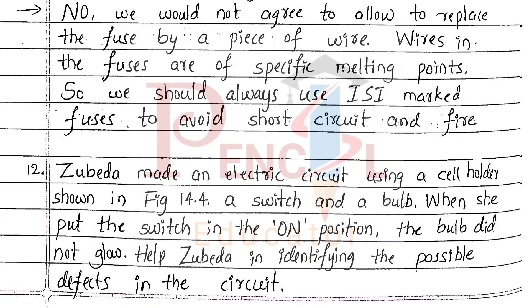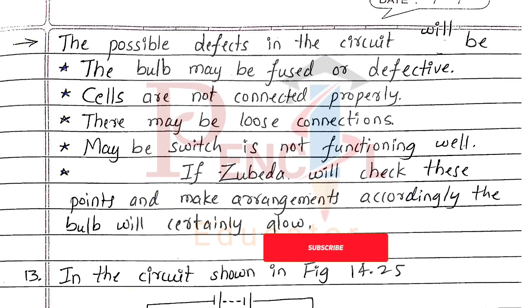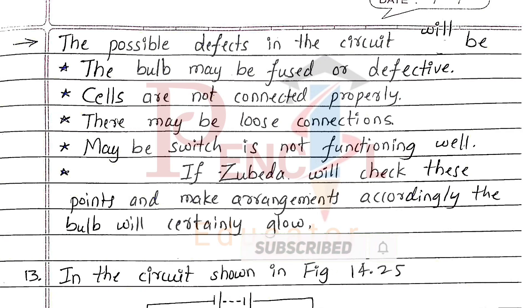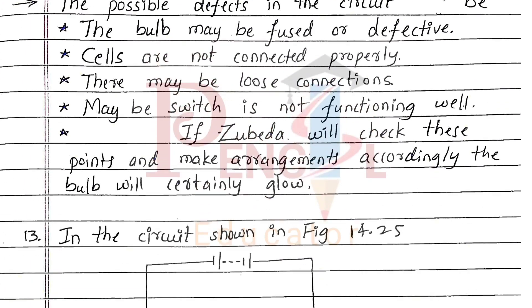Twelfth one, Zubaydah made an electric circuit using a cell holder shown in figure 14.4, a switch and a bulb. When she put the switch in the on position, the bulb did not glow. Help Zubaydah in identifying the possible defects in the circuit. The possible defects in the circuit will be: the bulb may be fused or defective, cells are not connected properly, there may be loose connections, or the switch is not functioning well. If Zubaydah checks these points and makes arrangements accordingly, the bulb will certainly glow.